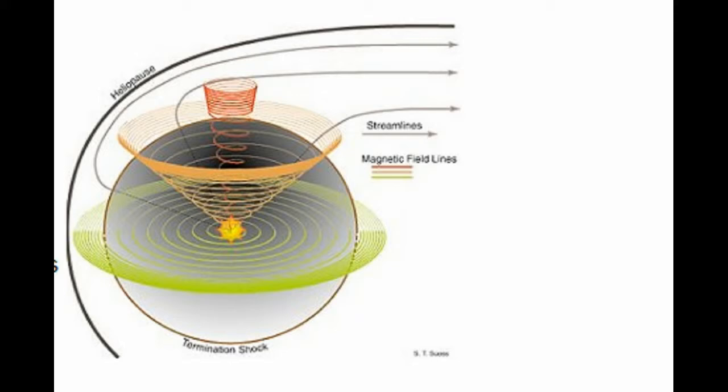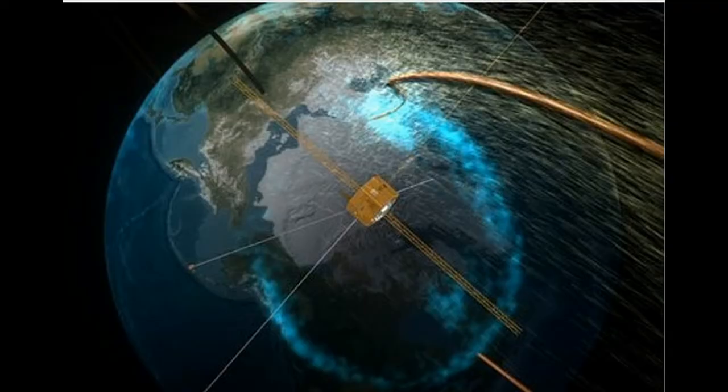Skies above the Arctic Circle turned green on December 25 when the interplanetary magnetic field (IMF) near Earth turned south. This opened a crack in our planet's magnetosphere. Solar wind poured in and fueled a display of northern lights.